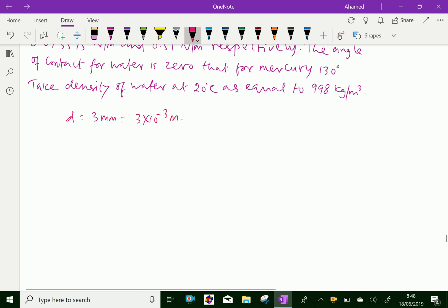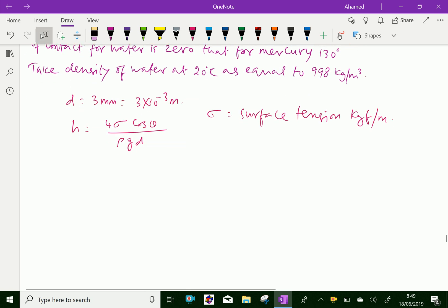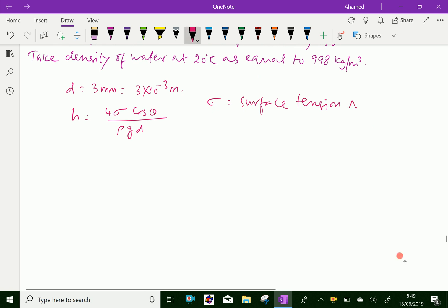Now, capillary effect, that is, rise or depression is given in the equation. Suppose we have H equal 4 sigma cos theta over rho g D. Where sigma is surface tension of liquid in N/m or kg force per meter, theta is the angle, and rho is the density of liquid.